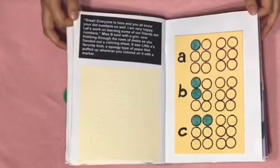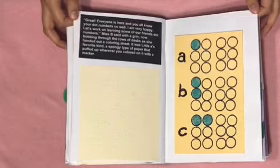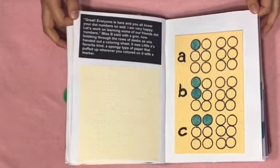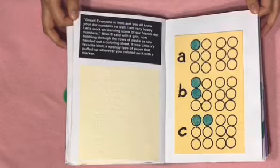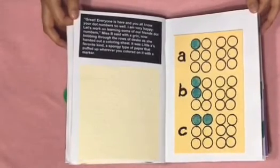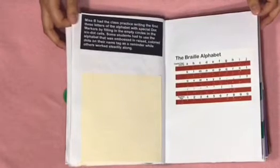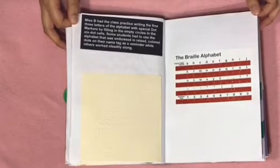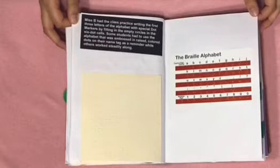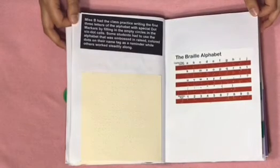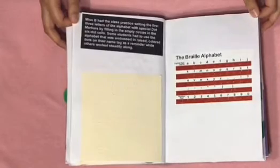Great! Everyone is here, and you all know your dot numbers so well. I'm very happy. Let's work on learning some of your friends' dot numbers, Miss B said with a grin, now bobbing through the rows of desks as she handed out a coloring sheet. It was Little A's favorite kind, a spongy type of paper that puffed up whenever you colored on it with a marker. Here we have the manila textured paper with the colored in raised dots for letters A, B, and C. Miss B had the class practice writing the first three letters of the alphabet with special dot markers by filling in the empty circles in the six dot cells. Some students had to use the alphabet that was embossed in raised colored dots on their name tag as a reminder while others worked steadily along. Here we have the Braille alphabet chart.